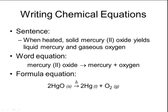Lastly, we can write a formula equation. A formula equation is the fastest way to write a chemical equation, where instead of writing the names of the chemicals, you write the formulas. Mercury oxide has the chemical formula HgO. Mercury by itself has the chemical formula Hg. Oxygen gas has the chemical formula O2. Because my original sentence said 'when heated,' I would need to put a delta over my arrow to indicate that the mercury oxide has to be heated in order for it to break down.